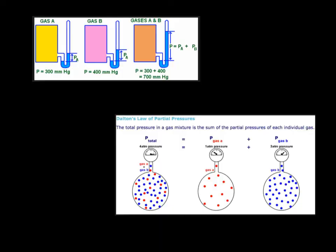There's just a couple more pictures kind of showing Dalton's Law, but I think you've probably got the idea here. If I have gas A at 300 millimeters of mercury and gas B at 400 millimeters of mercury, if I combine them together in the same volume, not in a larger container, the total pressure is now 300 plus 400, which is 700.